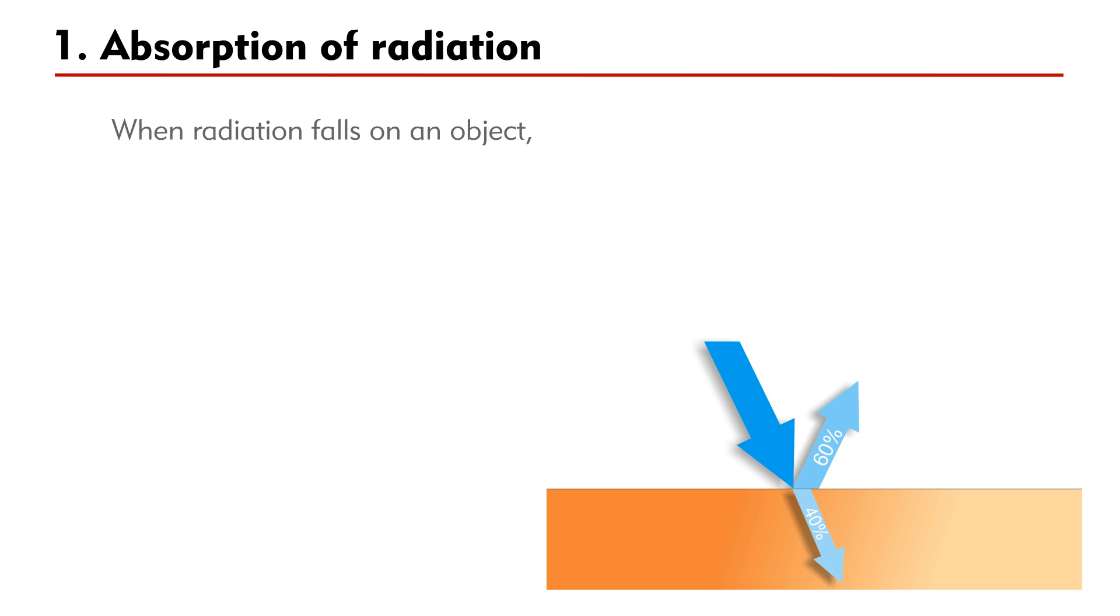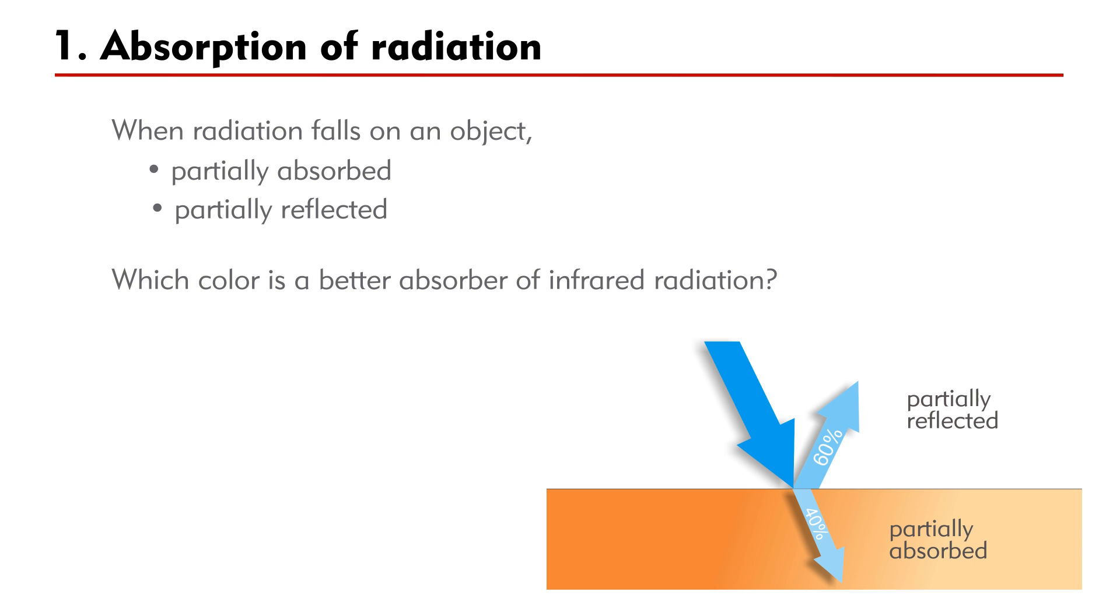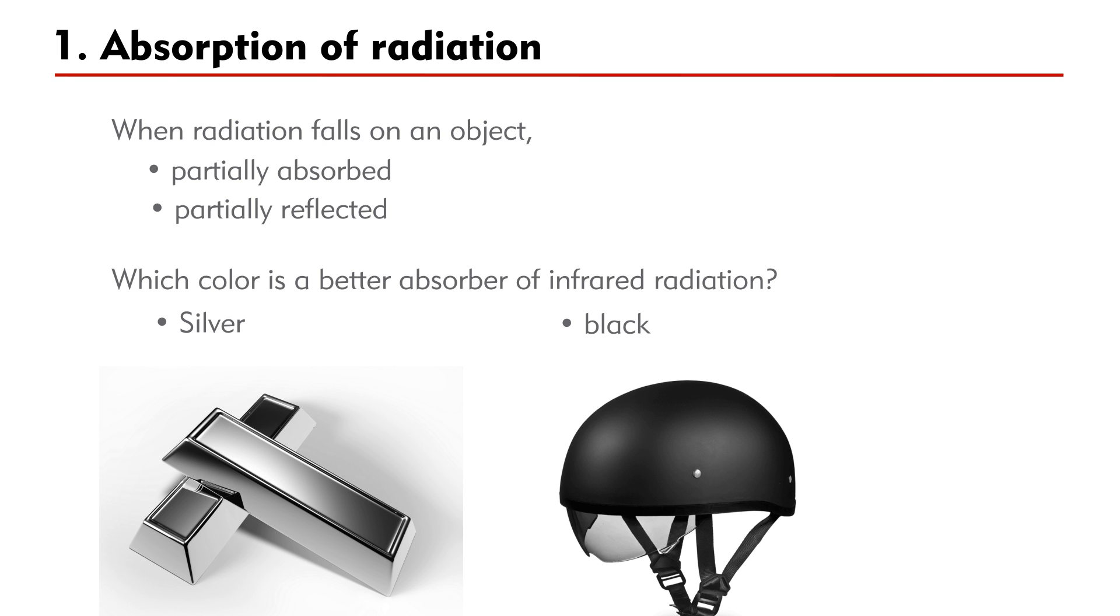When radiation falls on an object, it is partially absorbed and partially reflected. Which color is a better absorber of infrared radiation? Silver or black?